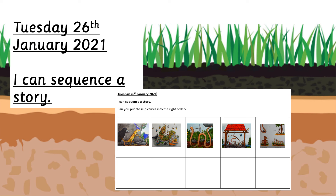So this is what your sheet looks like today. What you need to do is cut out the different pictures and then put them into the right order — just stick them in the boxes so that they're in the right order. You don't need to do anything else today. Once you've done that your job is done and we'll come back for another job tomorrow.